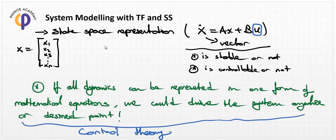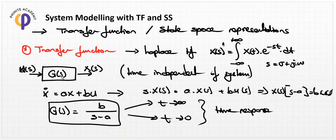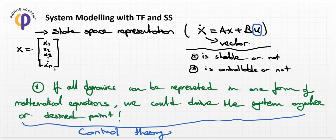Hello guys. In the previous lesson we talked about how to create a system dynamics model by using the transfer function and state space representation. We discussed the advantages of these approaches. If we have a simple system, we can use the transfer function method, and if we have many state variables in our system, we should use the state space representation.